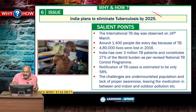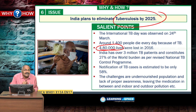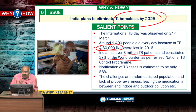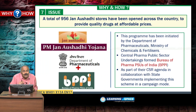India plans to eliminate tuberculosis by 2025. Every year, 4,80,000 lives were lost to TB — this is the figure for 2016. India has over 3 million TB patients and constitutes 27% of the world burden, meaning 27% of the world's TB patients are in India.